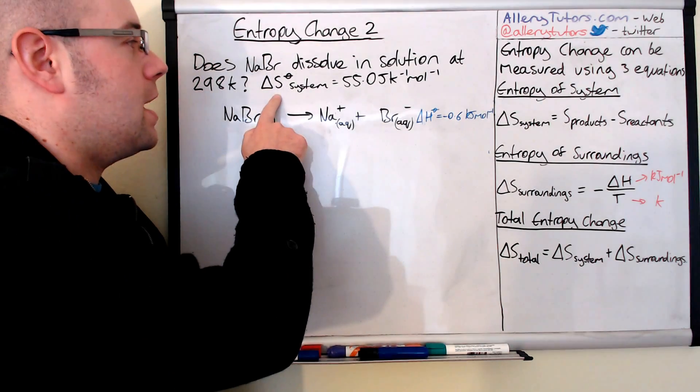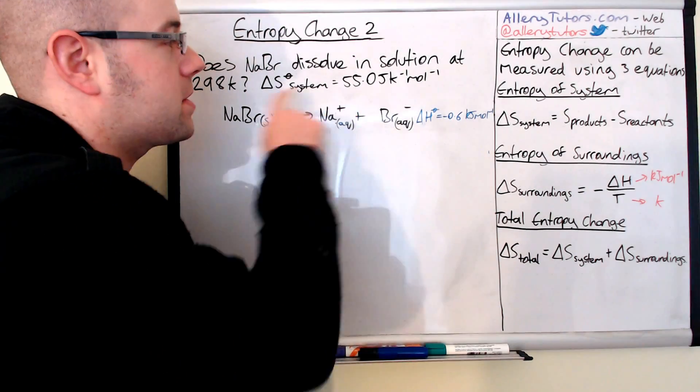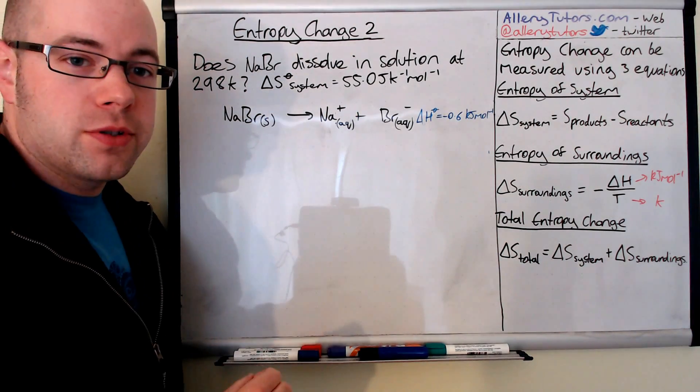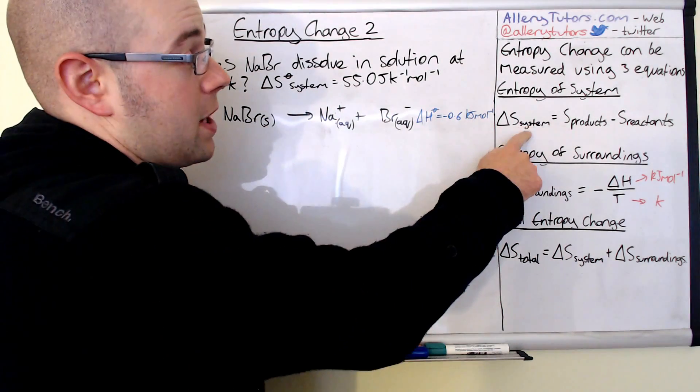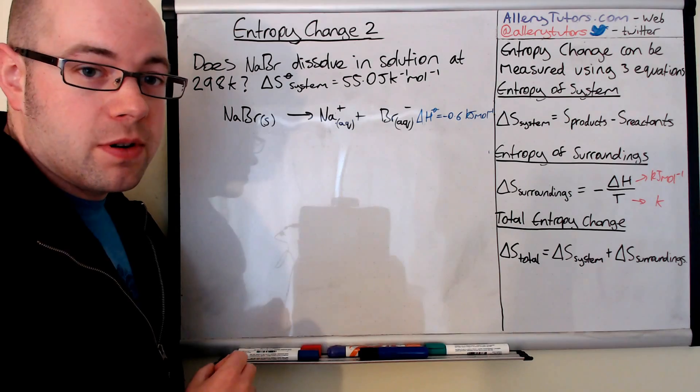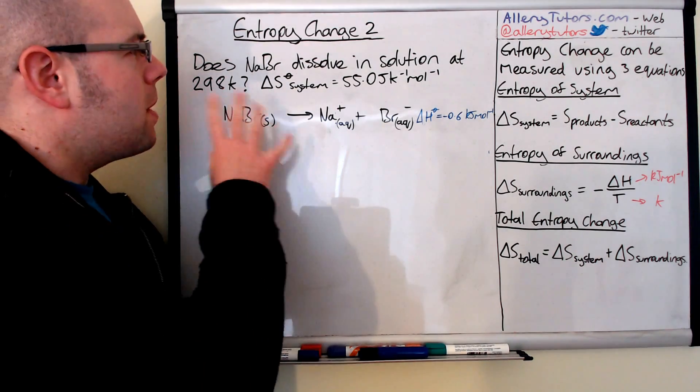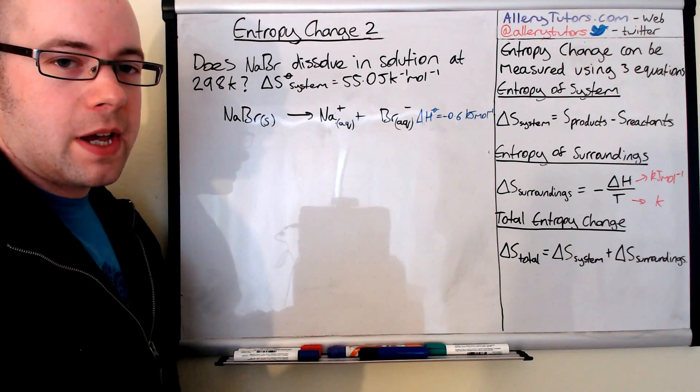They've given us the delta S of the system as well. The delta S of the system is 55 joules per Kelvin per mole. So the system bit, we don't actually need to work out because they've given us that number. But we do need to use the other two equations. When we're asking if this will dissolve, we're looking for an entropy value that is positive.